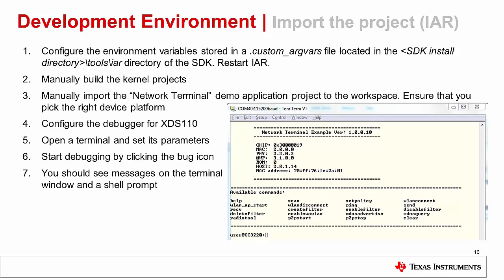To start the debug session, select Project Options from the menu and select the Debugger category. In the Setup tab, choose TI-XDS as the driver and click OK. Go to the TI-XDS category, choose TI-XDS 110 Emulator as the emulator, and JTAG 4PIN as the interface. Finally, start debugging by clicking the green arrow on the top. Now go back to the terminal window. You can see the available commands and a shell prompt.